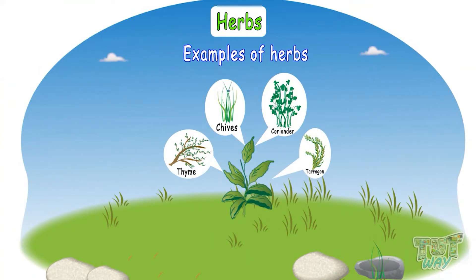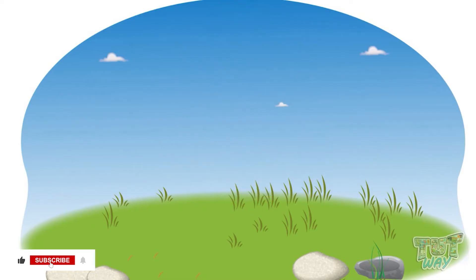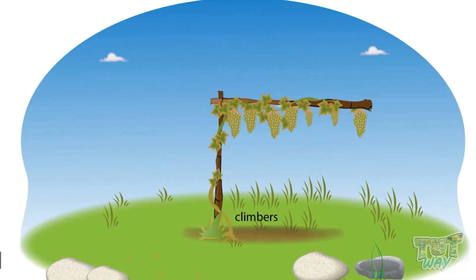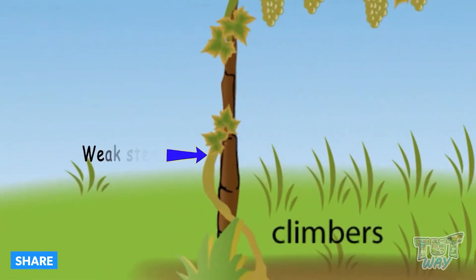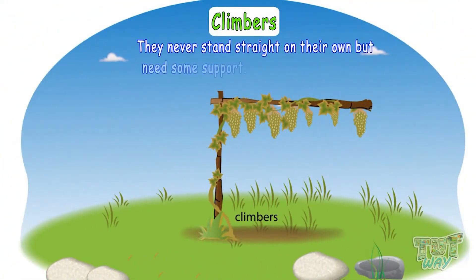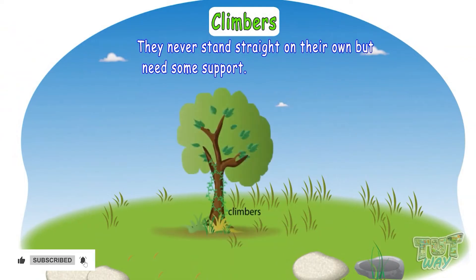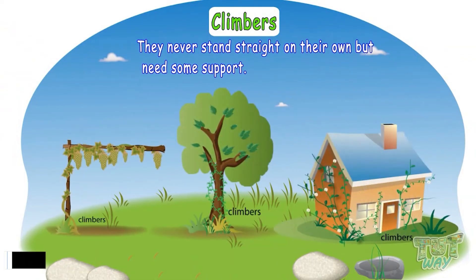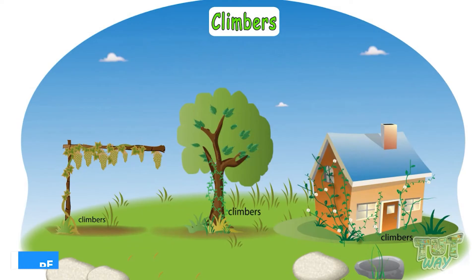These are some examples of herbs. Climbers have weak, green, and very soft stems. Now let's see some climbers. Climbers are plants that have very weak stems and cannot stand on their own — they need support to climb up. They never stand straight on their own but need some support, like another tree or a stick, to climb up.